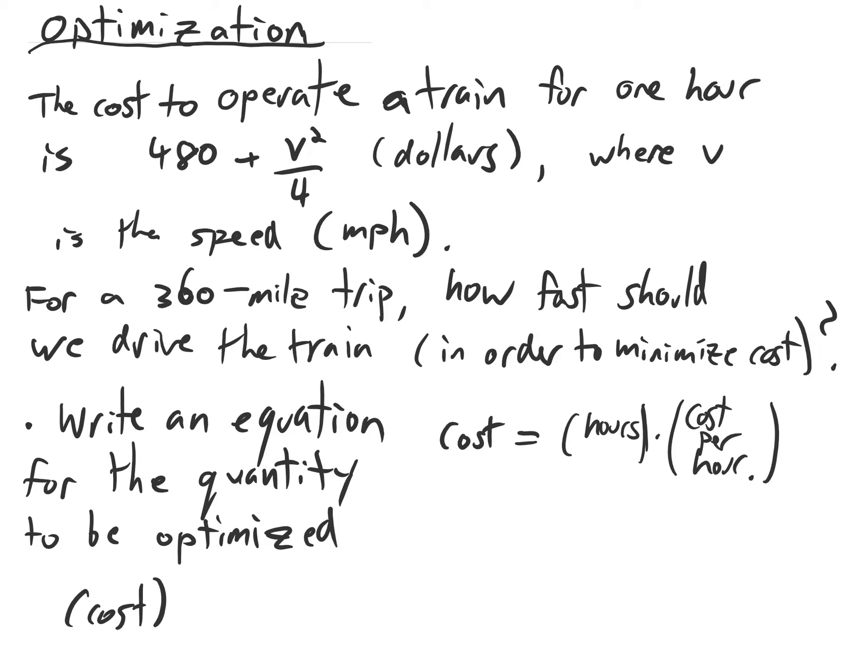Good start. Let's let t equal hours. So now we have the cost is t times the cost per hour. But we can say a little bit more about the cost per hour. We're given that in the problem it's 480 plus v squared over 4.